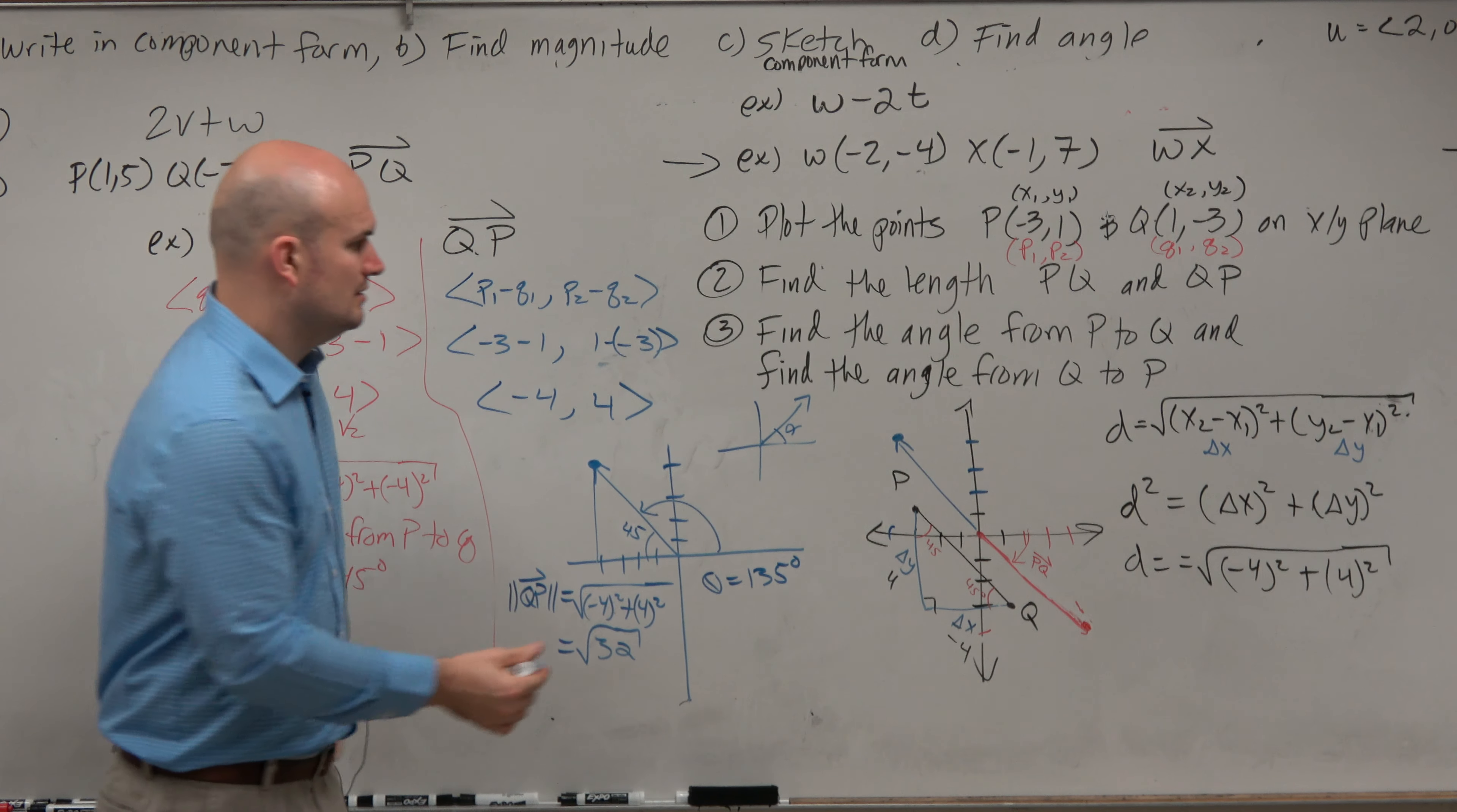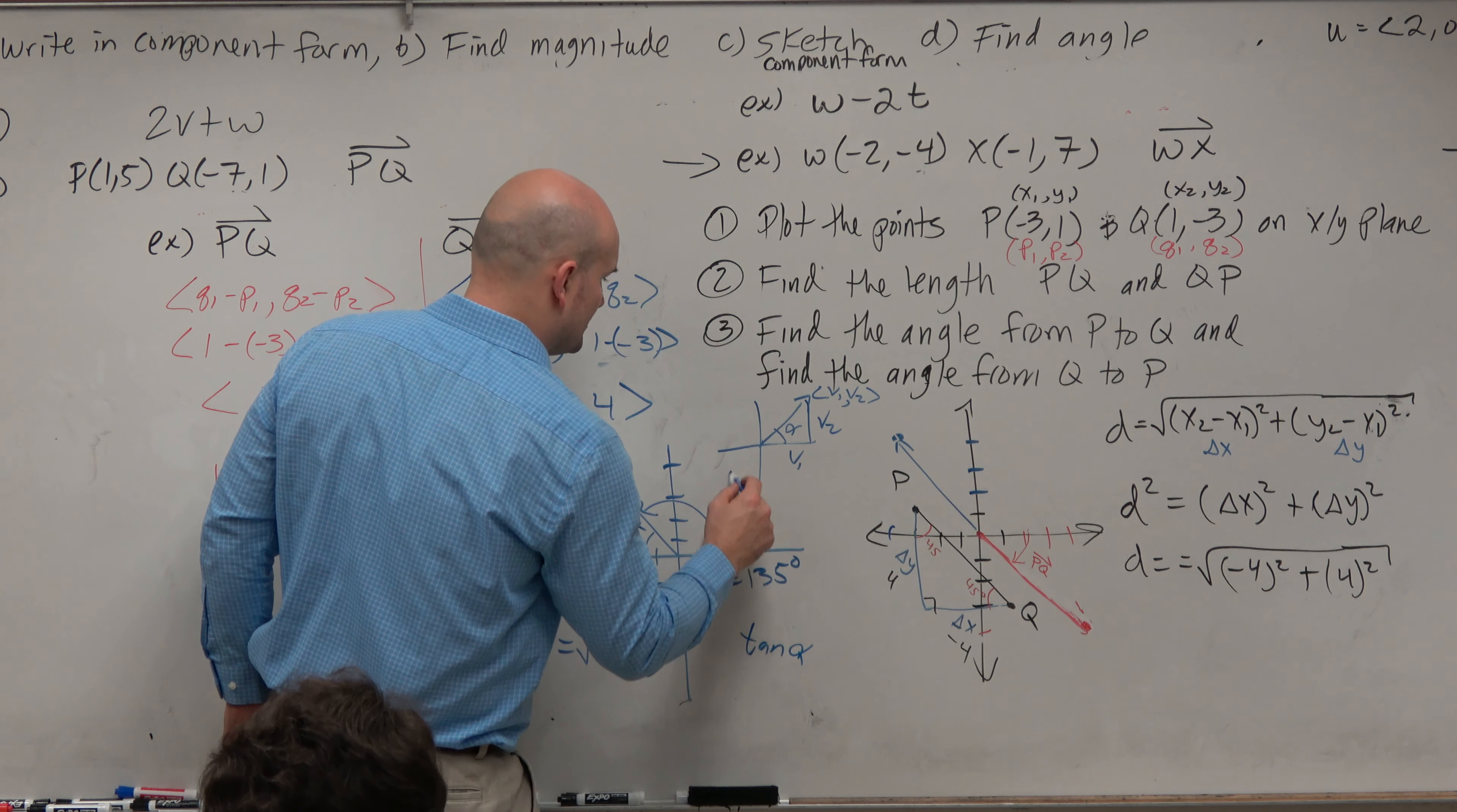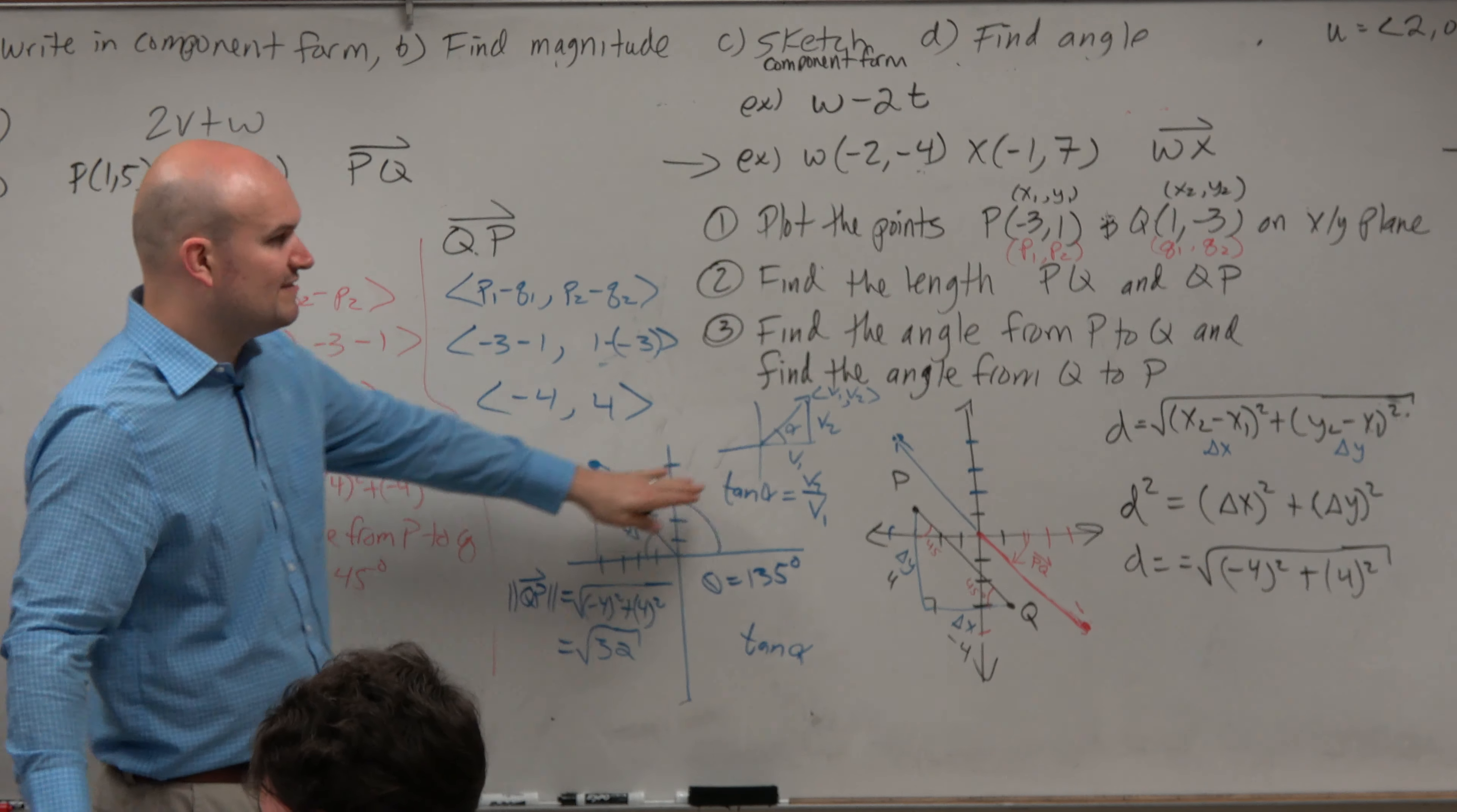Well, if you look at this in component form, here's V1 comma V2. Here's V1, here's V2. The tangent of alpha, where I wrote it right there, tangent of alpha is equal to opposite over adjacent. So you're basically just taking your components, basically taking your components to find the angle.